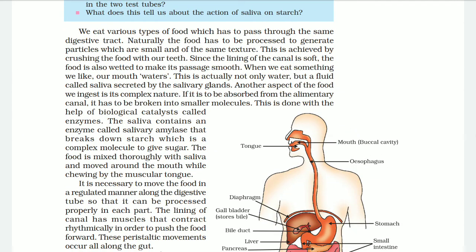When food enters the mouth, we eat various types of food. Whenever we see some type of food, water comes into our mouth — this is a natural digestive tract response. The food has to be processed to generate particles of smaller and uniform texture. This is achieved by crushing the food with our teeth. Since the lining of the canal is soft, the food also needs to be made smooth for easy passage. When we eat something we like, our mouth starts watering — this is not actually water but a fluid called saliva, secreted by the salivary glands.